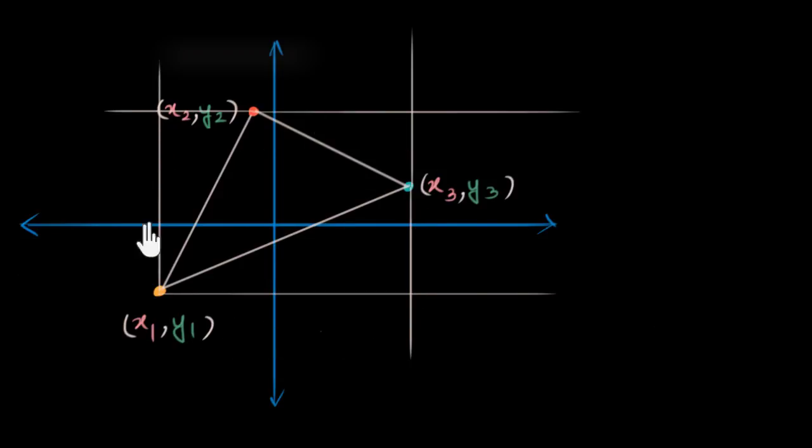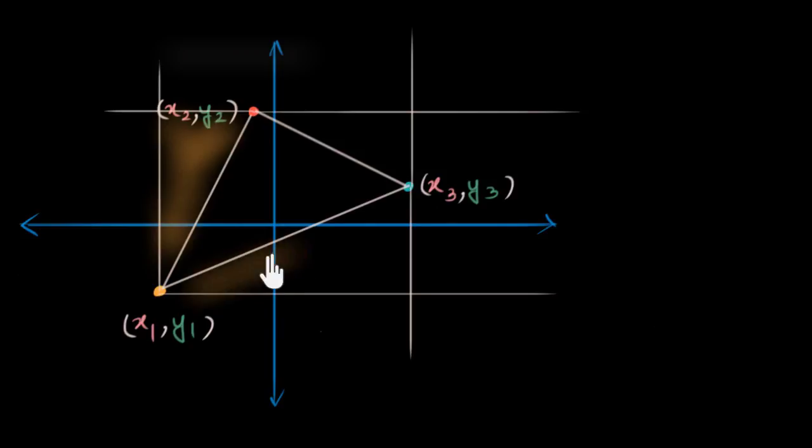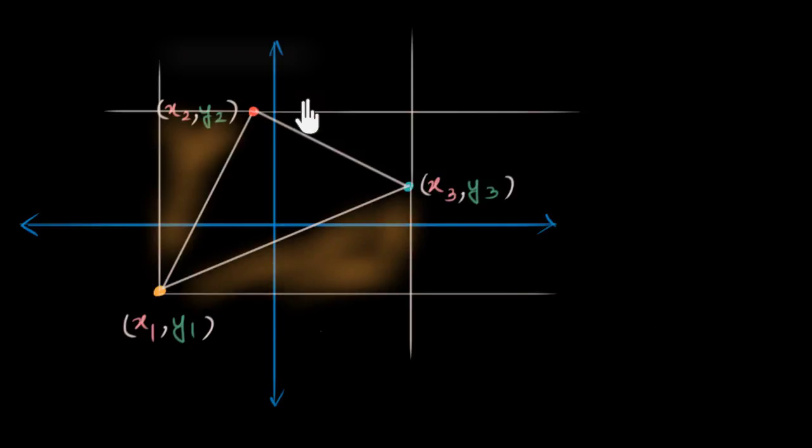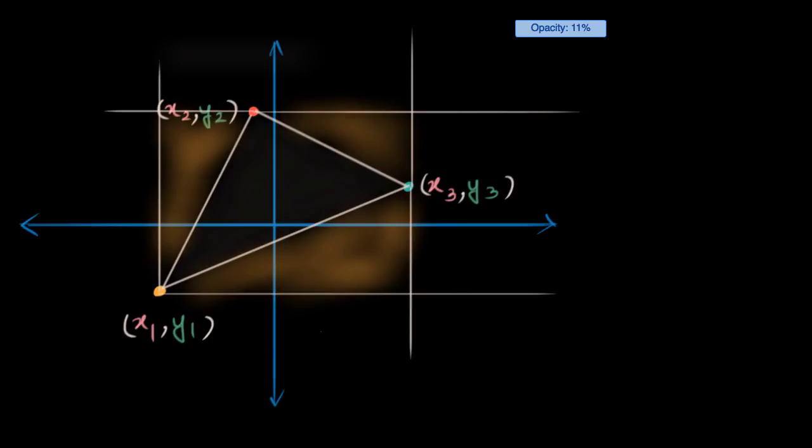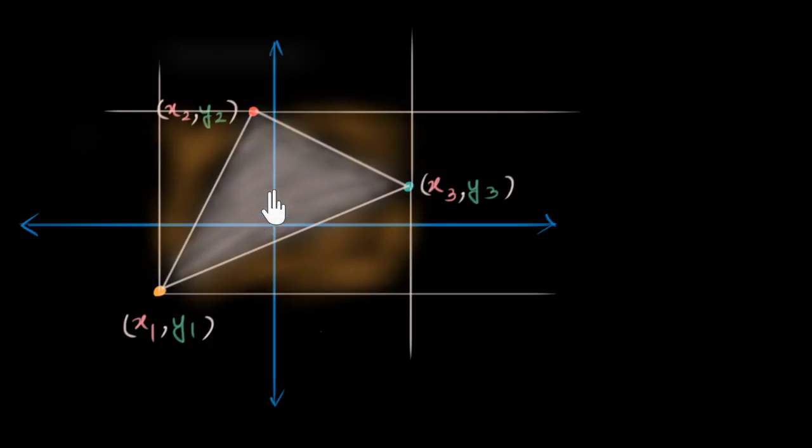There is a rectangle over here which covers this entire region and there are these three triangles. So let me shade these triangles. I have these three triangles whose area if I subtract from the original rectangle, this big one over here, I will get what I want which is the area of my triangle. So I actually have my path ready.